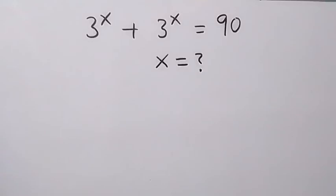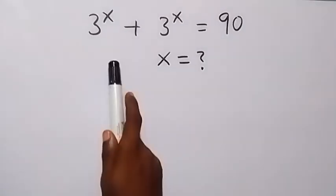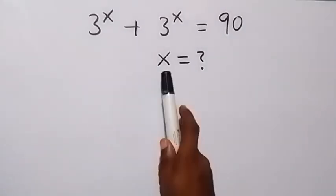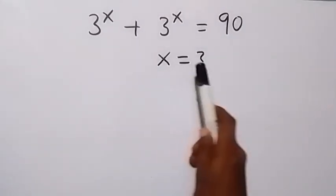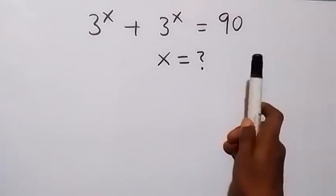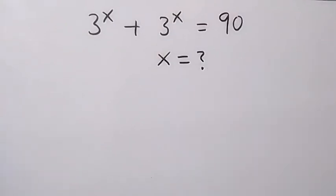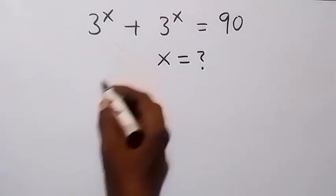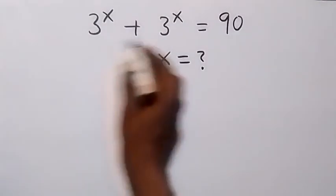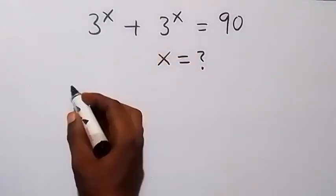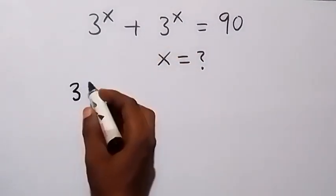Hello, you are welcome. Solve for x in this exponential equation: 3 raised to the power x plus 3 raised to the power x equals 90. From here we can factor 3 out.